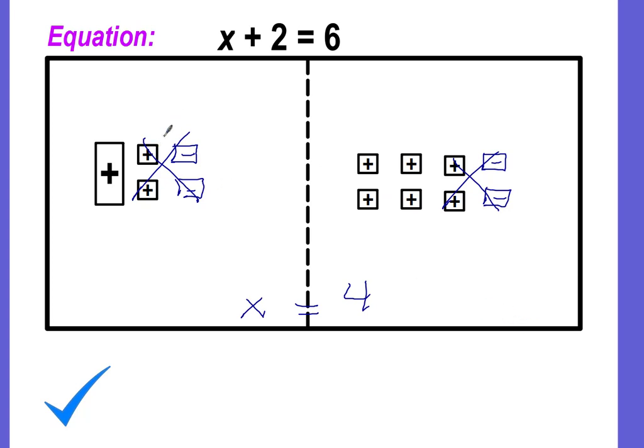And I didn't explain this, but instead of using a scale, we're now going to use what we call an algebra mat. And basically, it's just like a rectangular box with a line down the center. The line down the center represents the equal sign. Therefore, the left side is the left side of your equation. The right side represents the right side of your equation.